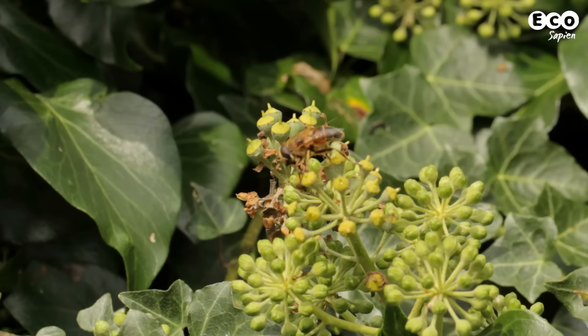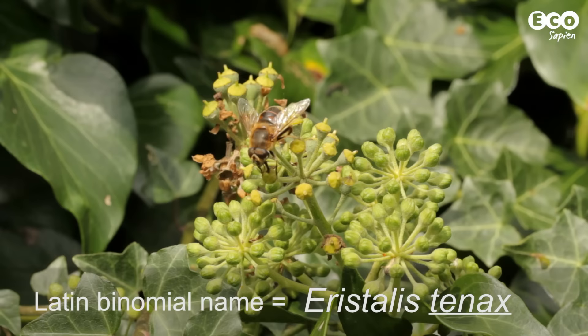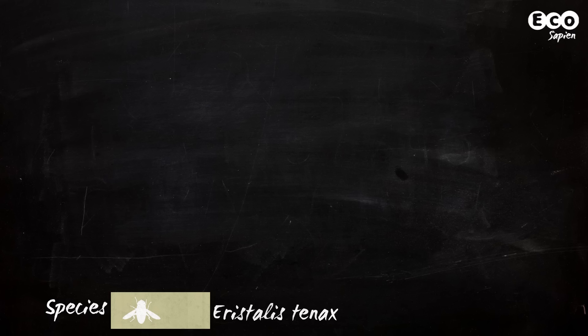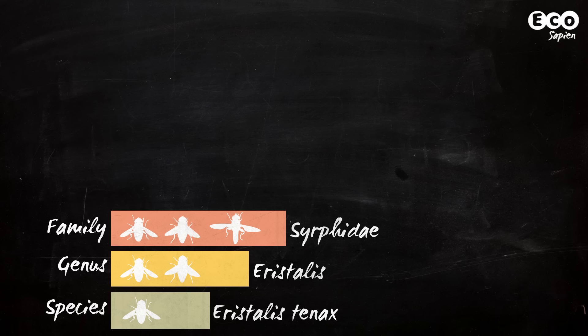This is the Latin Binomial name, and is unique to this species. Tenax is the species name, given to only that specific type of dronefly. Eristalis is the name of the genus. There are nine other species of dronefly in Britain that share this genus, all of which are closely related. All members of this genus are found in the family Syrphidae, the hoverflies.